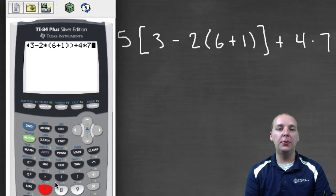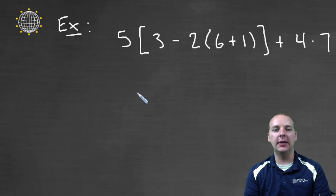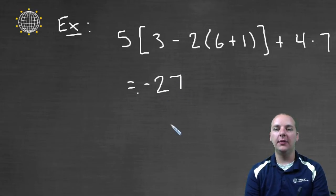And when I push enter it will take care of the order of operations for me and leave me with an answer of negative twenty-seven. Okay so again as long as we're careful with our parenthesis it can take care of all the heavy lifting for us.